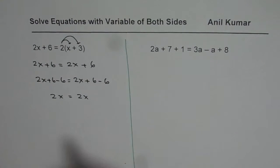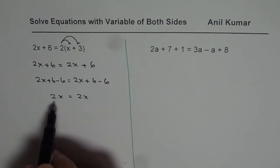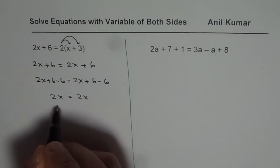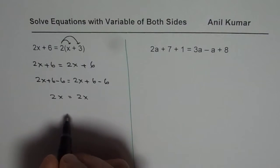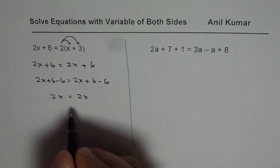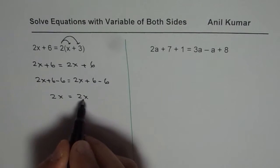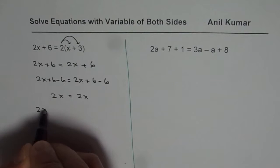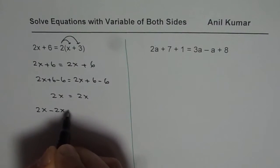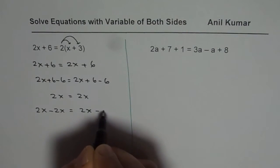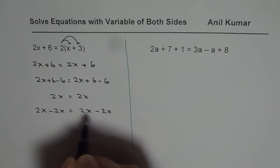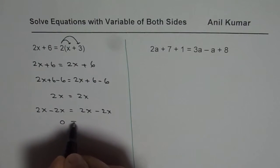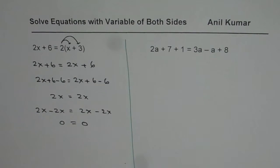If we divide both sides by 2, we get x equals to x. Or if we bring the 2x terms to one side, we have 2x minus 2x equals to 2x minus 2x. In that case we get 0 equals to 0. So that is what we get with this kind of equation.